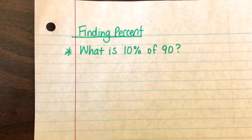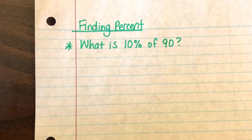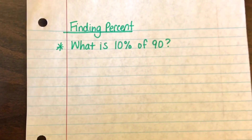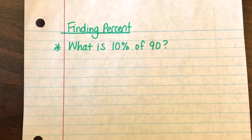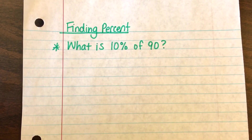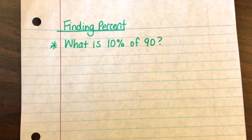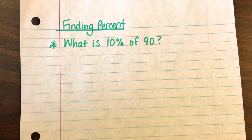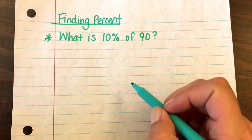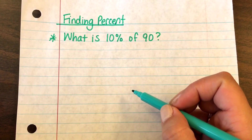In this video I'm going to show you how to find the percent of a number. There are two ways to find percent, but I'm going to show you first by using the proportion way, which is also the equivalent ratio way or equivalent fractions. The question asks: what is 10% of 90?